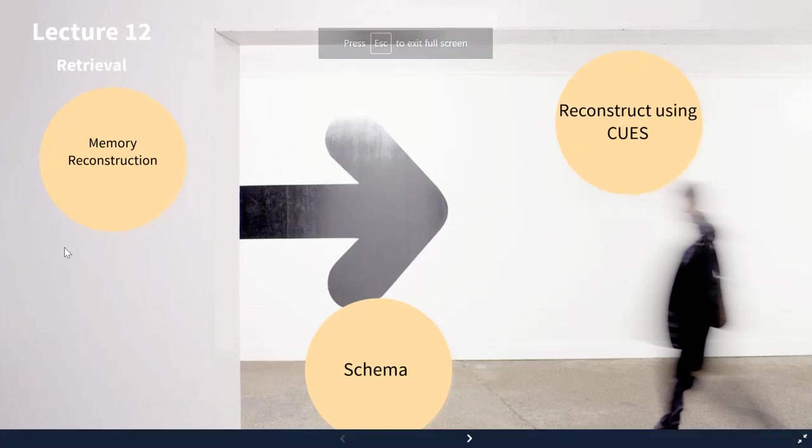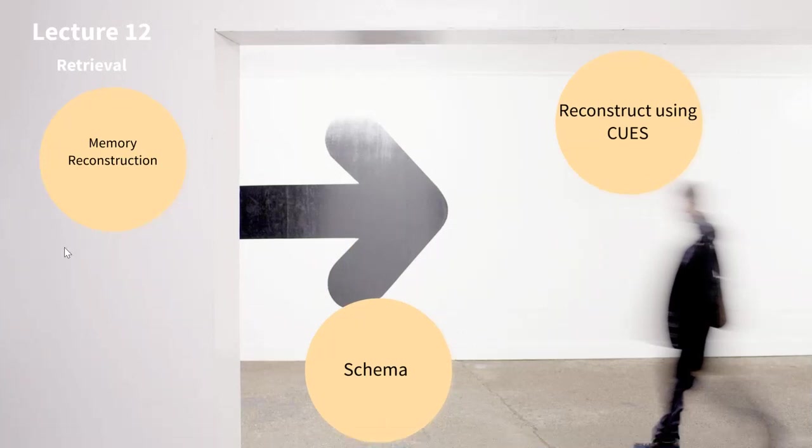Welcome to Psych 213, lecture 12, where we're going to talk about retrieval. Retrieval is just getting information out of long-term memory and back into our working memory. For example, if I were to ask you who's the president of the college in New Jersey and you can pull that name out, then you have retrieved information from your long-term memory.